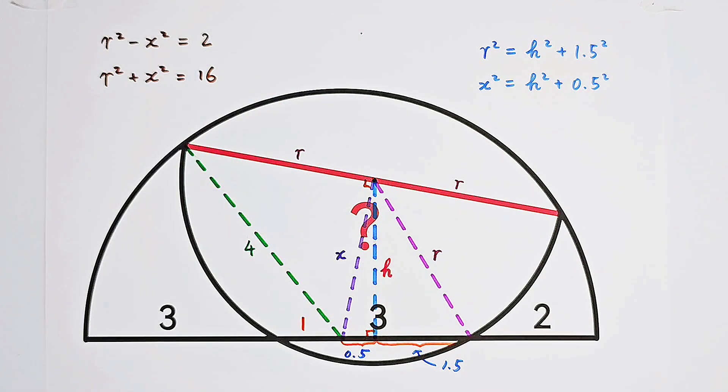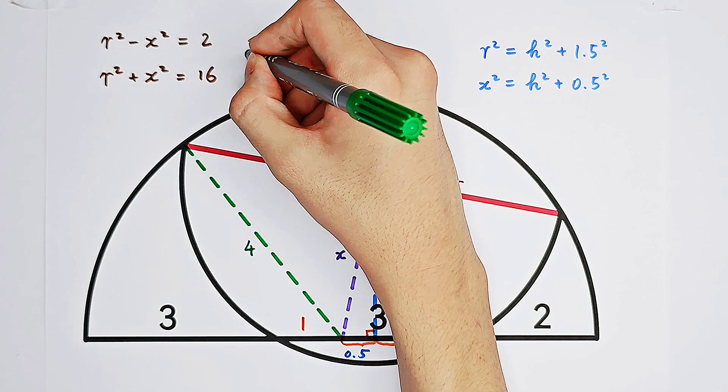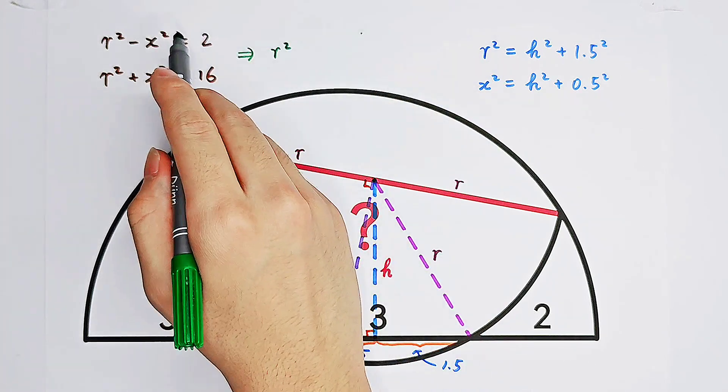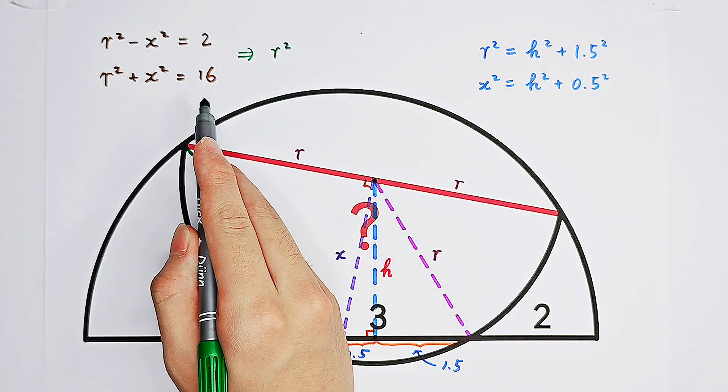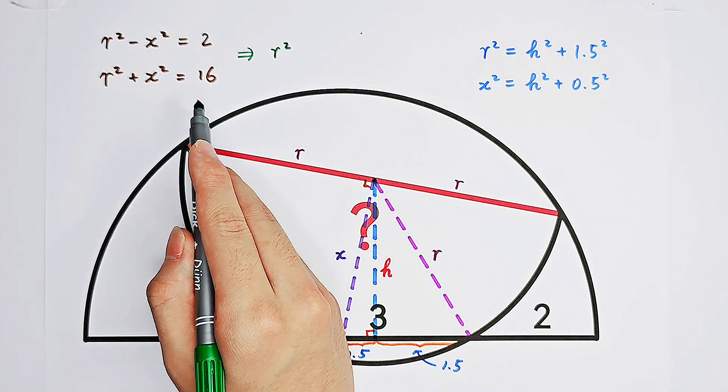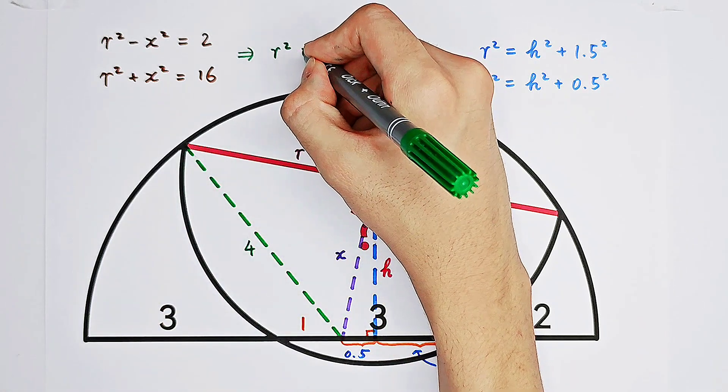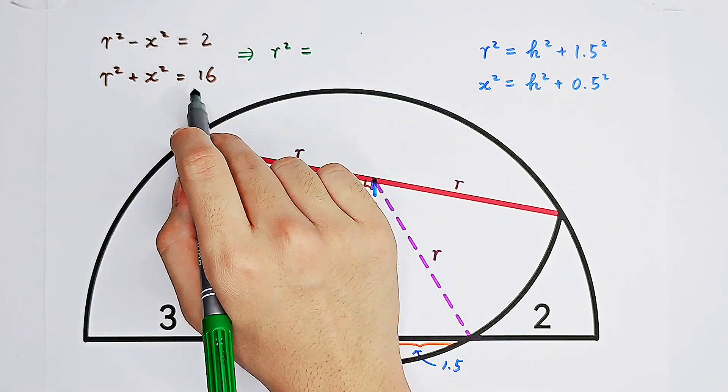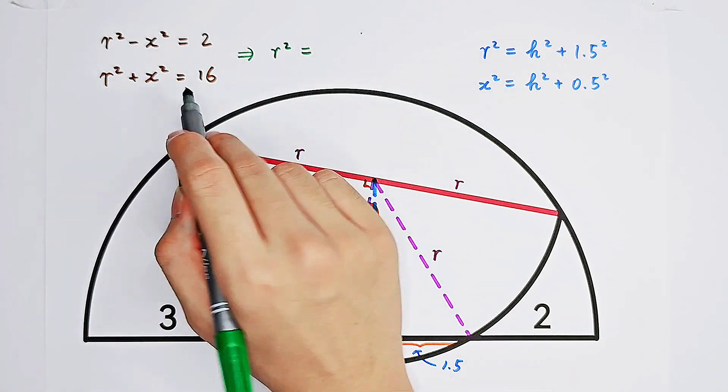So you have the sum and the subtraction of these two squared. What shall we do now? Solve for R squared. Add these two equations together, divided by 2, we get R squared equals 2 plus 16 over 2 is 9.